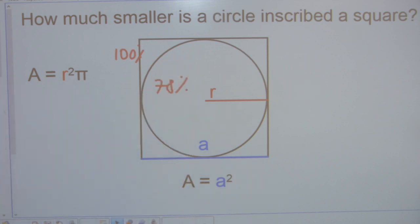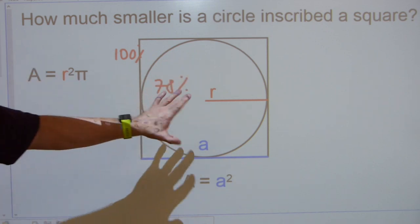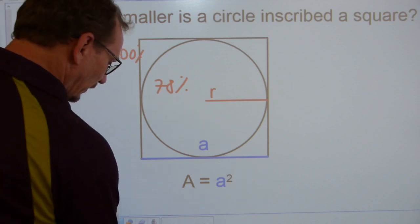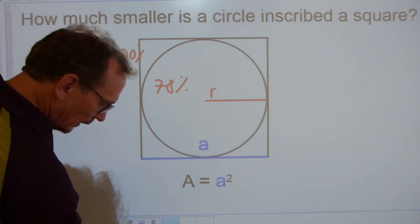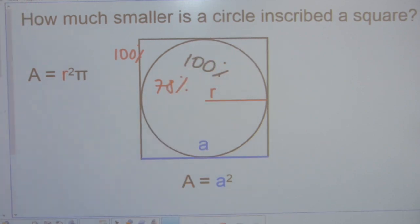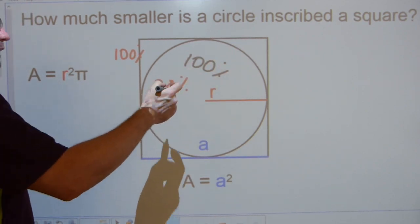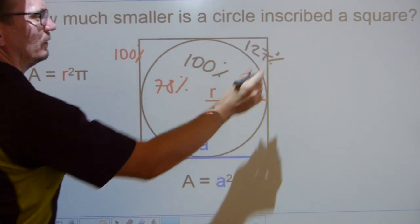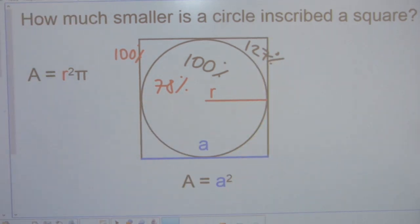So if the square is 100% in terms of area, then the circle's area is about 78%. Now, if you consider the comparison backwards, if you consider the circle to be 100%, then the square will be bigger, about 127 or some such thing.